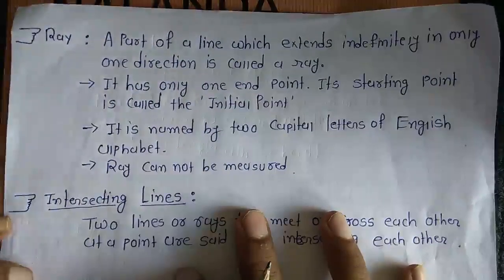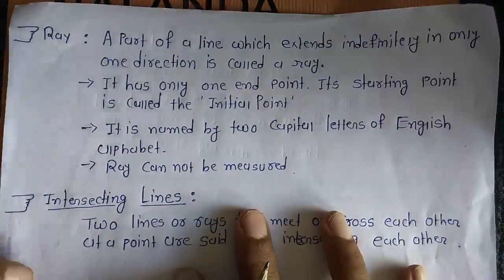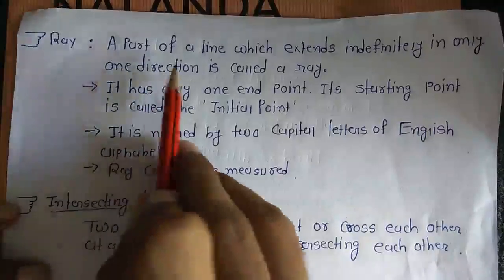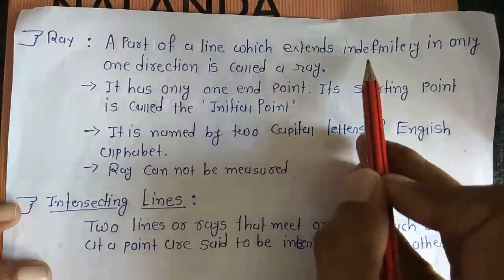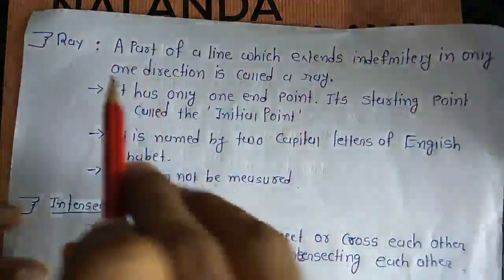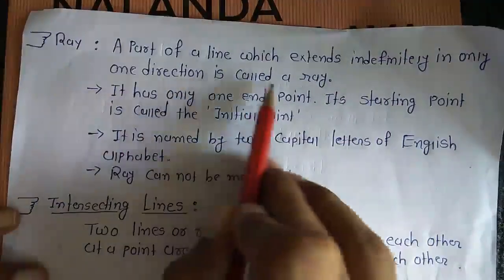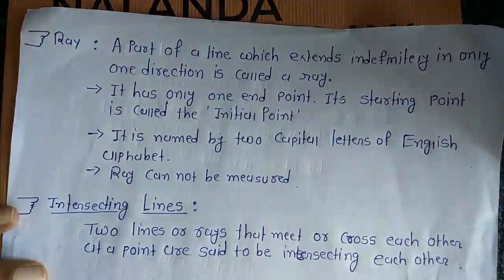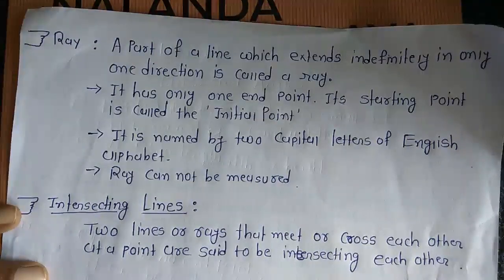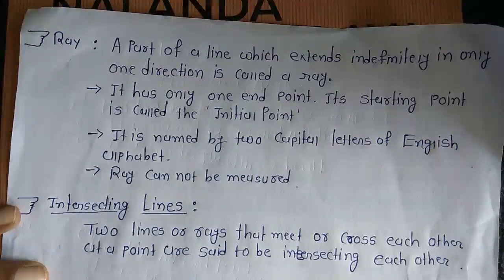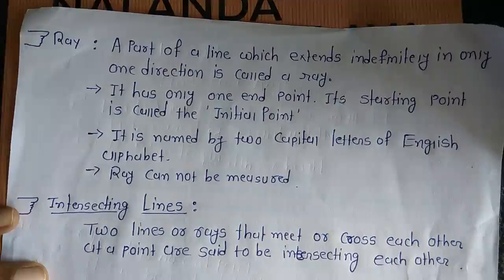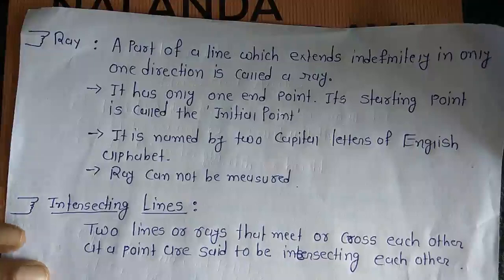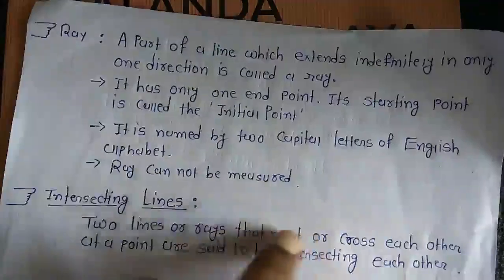Next geometrical concept: Ray. A part of a line which extends indefinitely in only one direction is called a ray. Ray bhi line ka hi ek part hai. Woh only one direction mein indefinitely extend hai. Line woh dono direction mein indefinitely extend thi, but ray only one direction mein indefinitely extend hai.